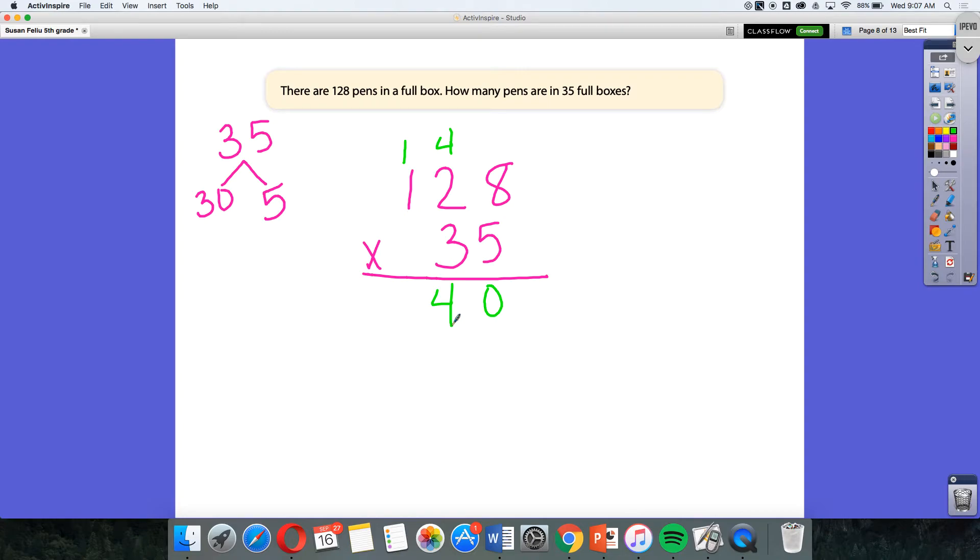Now, I'm going to take my 5 digit and multiply by that 1 digit, which would be 5, and then add that 1, which would be 6. But we really know that as 600.